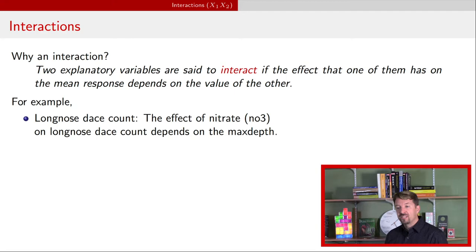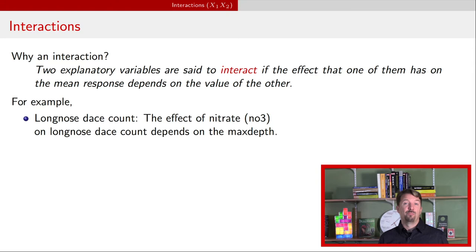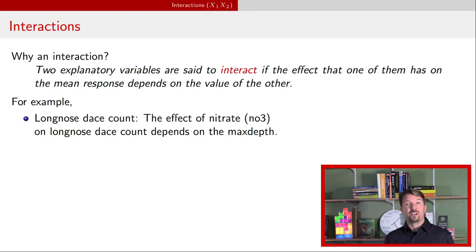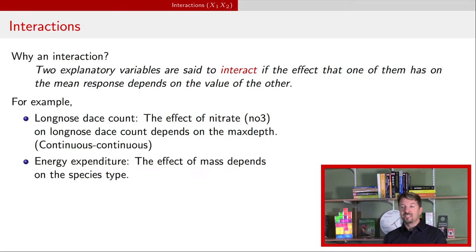As a couple of examples: the first example from a previous video talked about long-nosed dace, and it talked about the effect of nitrate and the maximum depth of a stream on the abundance or count of those long-nosed dace. If you believe that the effect of nitrate depends on max depth, or that the effect of max depth depends on nitrate, then you should use an interaction in that model. In this example, both explanatory variables are continuous, so we have a continuous-continuous interaction.